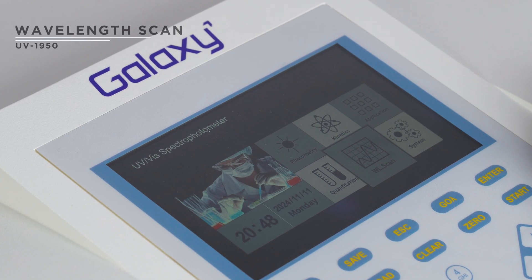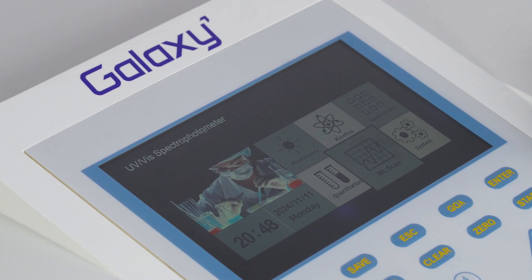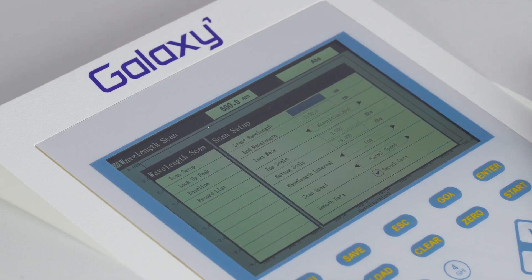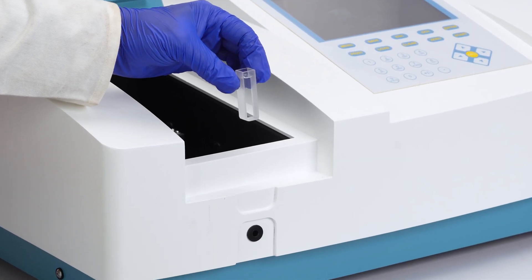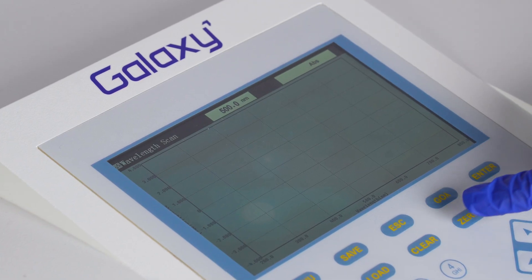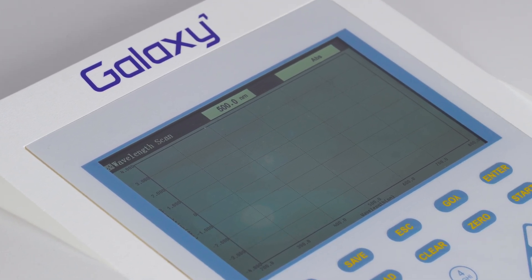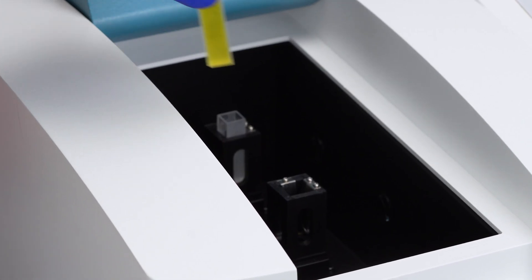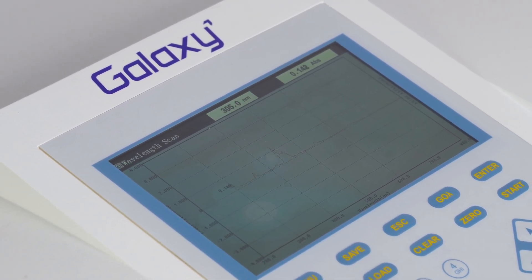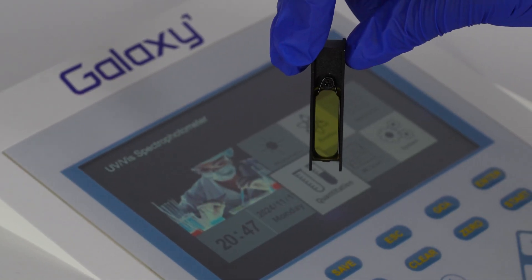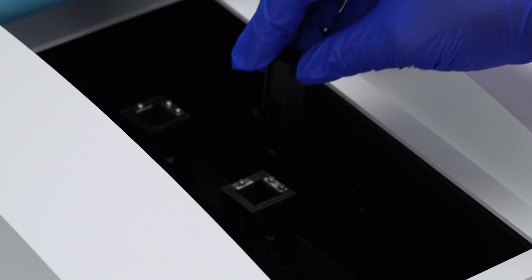Wavelength scanning measures unknown sample wavelengths. Input the start and end wavelengths, interval and scan speed. Place a blank solution and press zero to create a baseline. Insert the sample, then press start to begin scanning. Use a Holmium filter to check wavelength accuracy if needed.